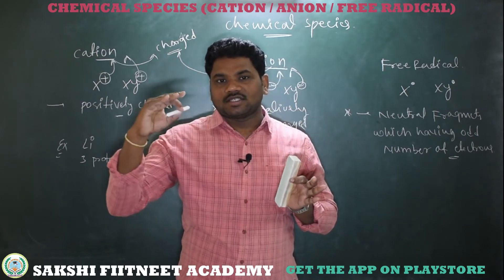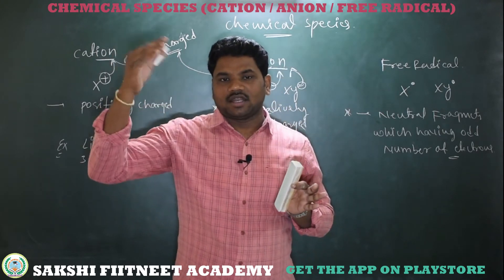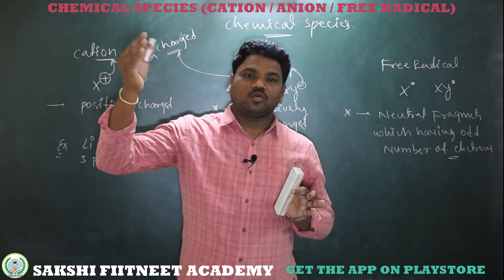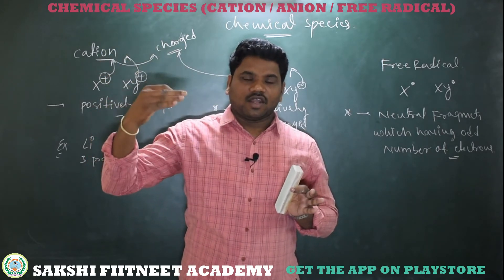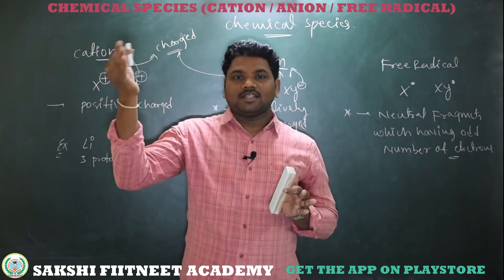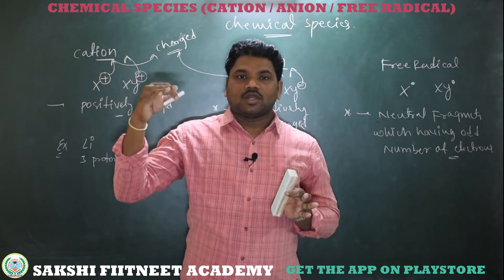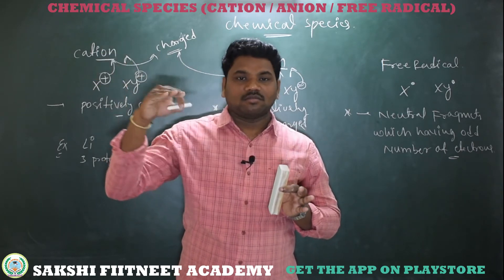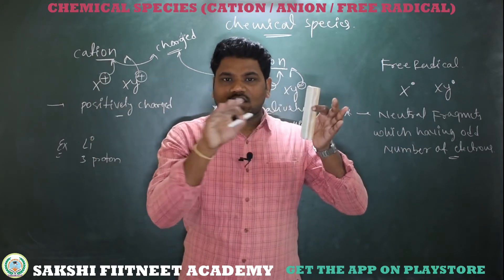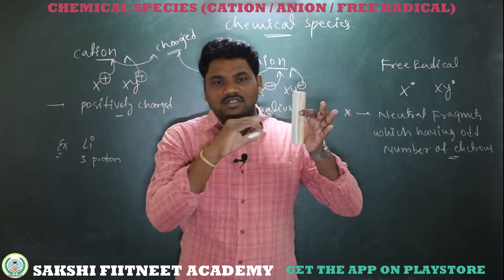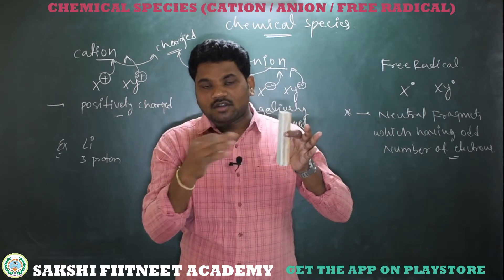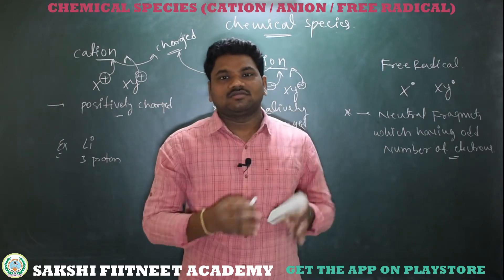If electrons are in excess, then we get minus one, minus two, or minus three depending on how many extra electrons there are. If one electron is excess compared to protons, then minus one; two electrons excess gives minus two. Similarly, one proton excess compared to electrons gives plus one; two protons excess gives plus two.